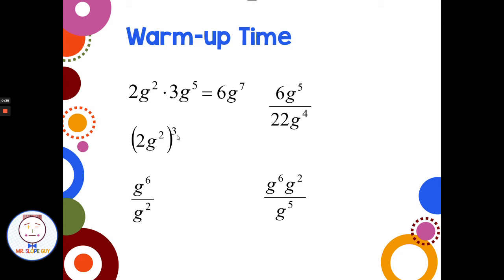Then this one, we have power of a power, so this 3 applies to the 2 and the 3 applies to the g. When I apply the exponent of 3 to the 2, I have 2 times 2 times 2 — not 2 times 3. That's 8. Then an exponent to an exponent, the power of a power rule is where we multiply the exponents, so we get 8g to the sixth.